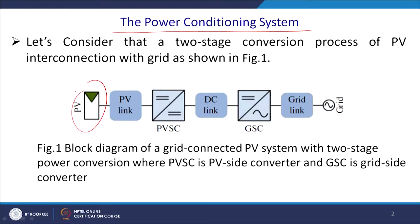You have a PV source and a PV link that will transmit the power, and ultimately you will track the maximum power point. For this reason you have a DC-to-DC converter. One DC-to-DC converter will track the MPPT, another DC-to-DC converter will give you the desired voltage level, and thus you come to the DC link, which is an entry point.